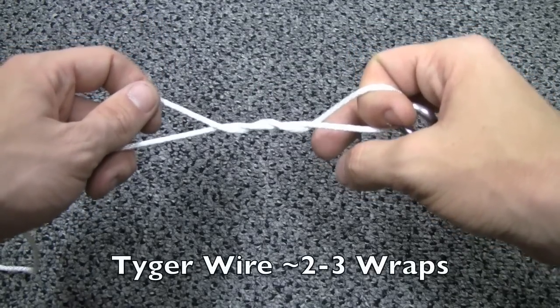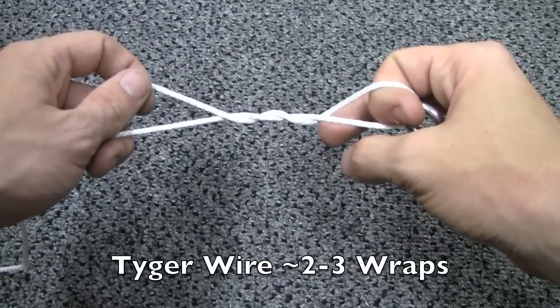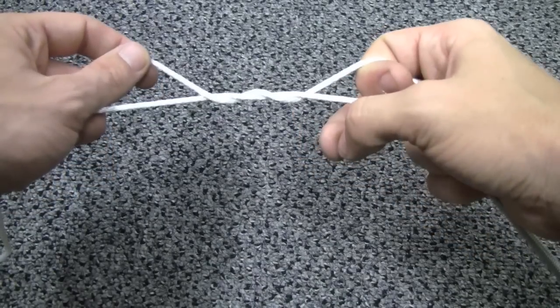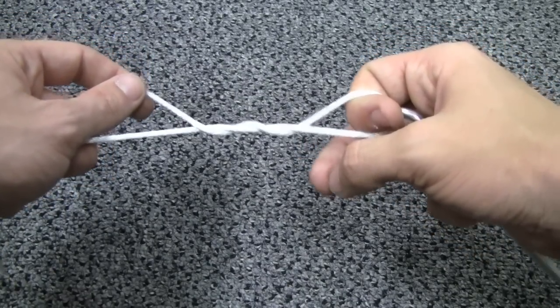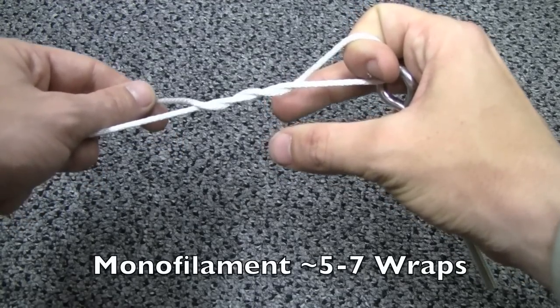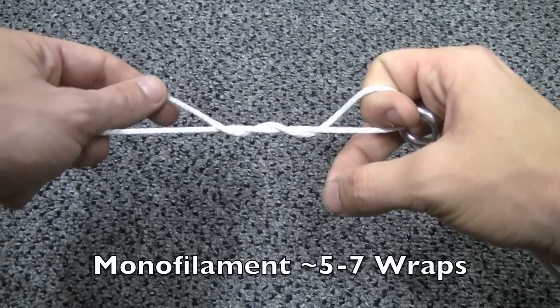The thicker the material you're using for your leader is, the less wraps it's going to require. Because I'm using this thick rope so that it's visible, I'm only going to do about two to three. Five to seven with monofilament is usually a pretty good ballpark to be in.